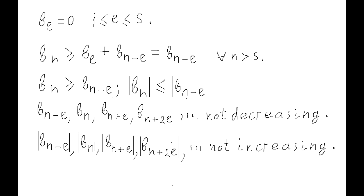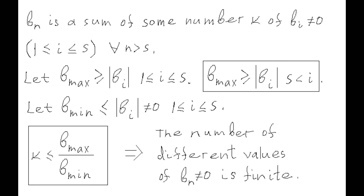Based on the recurrent formula used to calculate all values of members of sequence b_n, each member b_n where n is greater than s is a sum of some number of nonzero members b_i where i varies from 1 to s. Let's denote this count by k, and let b_max be the maximum of absolute values of all members b_i where i varies from 1 to s. Then b_max is the maximum of absolute values of all members of the sequence, because the sequence of absolute values of b_{n-l}, b_n, b_{n+l}, b_{n+2l}, etc. is not increasing, which covers all indices n greater than s.